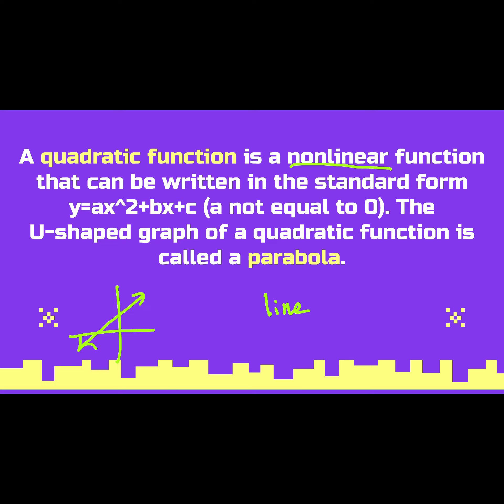It can be written in standard form, which we've already looked at. Standard form means ax squared plus bx plus c, and a, b, and c would all be numbers. We've looked at things like 2x squared plus 3x plus 7. These would be our polynomials. Now the difference is we're going to say y equals one of our polynomials, and we're going to graph them.